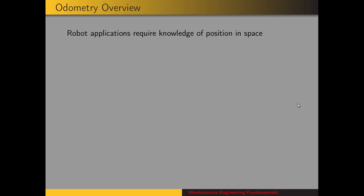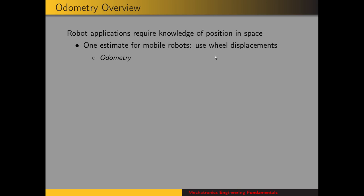Odometry comes about because for robot applications, it's required to know the current position in space. For example, if we want to send a robot to a goal spot, then we need to know its current spot in order to servo the robot to make up the difference from its current to the goal. One way of estimating the robot position is to use the wheel displacements, and that is known as odometry.